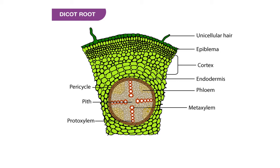After that, a cambium ring develops between xylem and phloem. All tissues inner to the endodermis — such as pericycle, vascular bundle, and pith — are collectively known as the stele. So by taking a transverse section (TS) of dicot root, we can study the anatomy and arrangement of different layers: epidermis or epiblema, cortex region, endodermis, pericycle, vascular bundle, and pith.